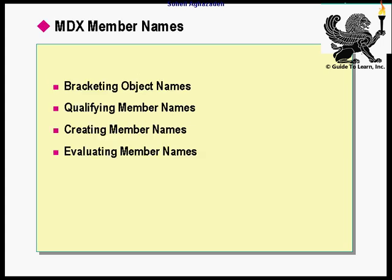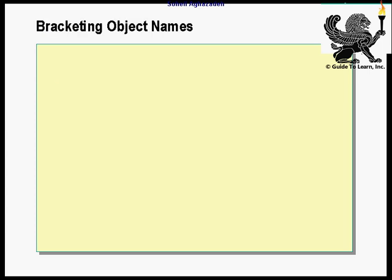Now let's talk about some of the rules and regulations you have to be familiar with in order to access the objects available within the cube. In the next few slides, we talk about bracketing object names, qualifying the member names, and how to create member names. At the end, we are going to evaluate different member names.